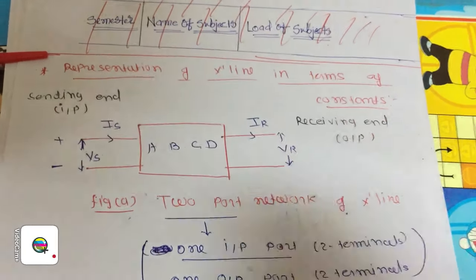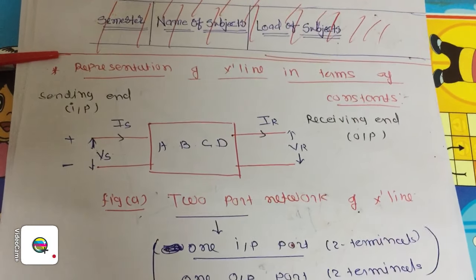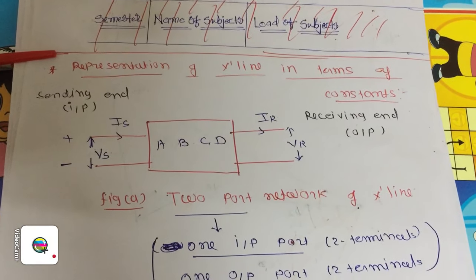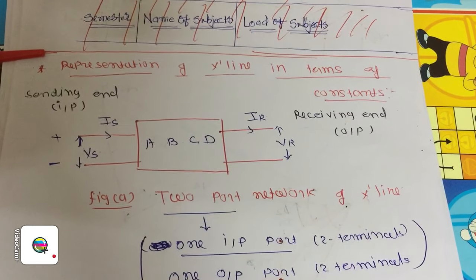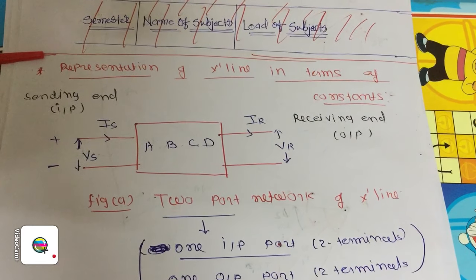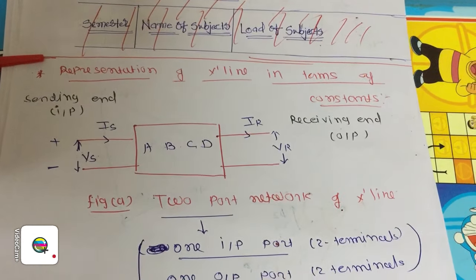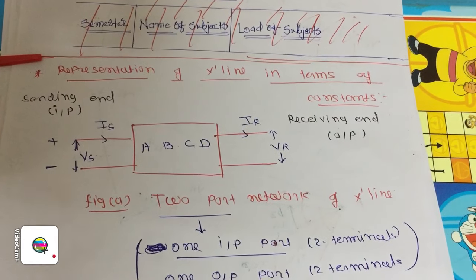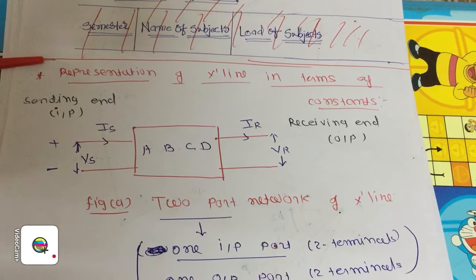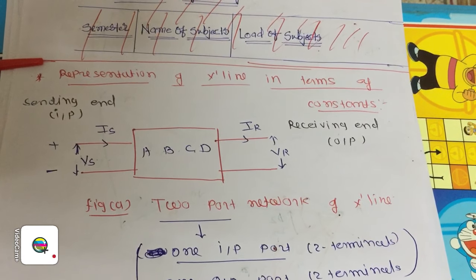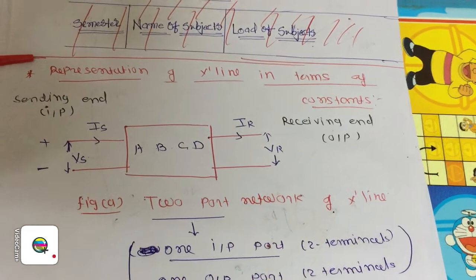Hello friends, I am Siddharth Mehta. This is the lecture of Power System 2 for 5th Semester Electrical. In this lecture, we will study the representation of transmission line in terms of constants — representation of transmission line in terms of ABCD constants.